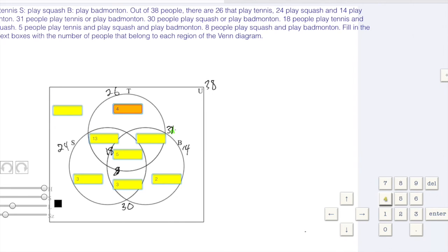And then for this little area here, we know that the people that play tennis is 26. And so I have 13 plus 4 is 17 plus 5 is 22 plus 4 is 26.